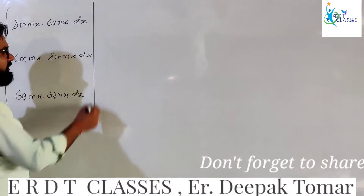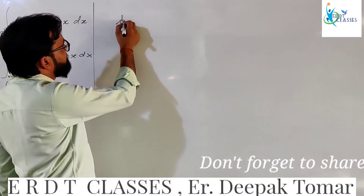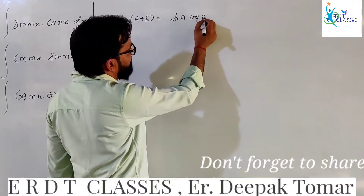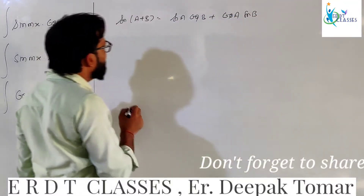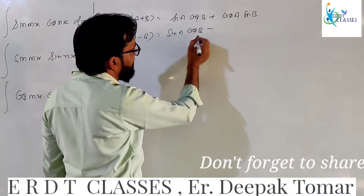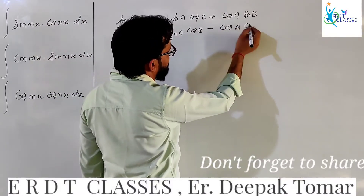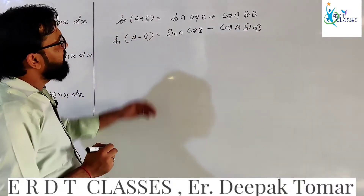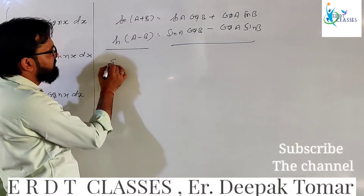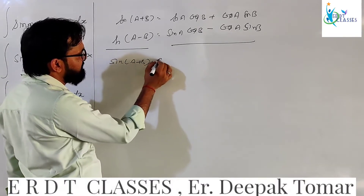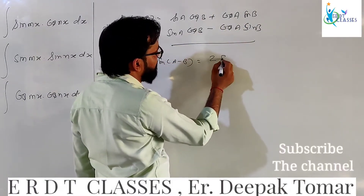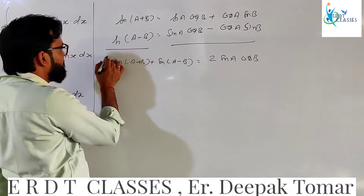We will use the sin A plus B formula: sin A cos B plus cos A sin B. And sin A minus B is sin A cos B minus cos A sin B. Now we will add these two formulas. Sin A plus B plus sin A minus B is equal to 2 sin A cos B.